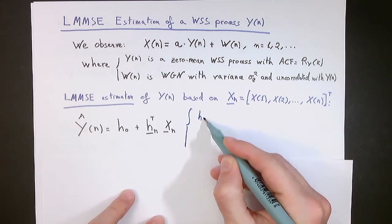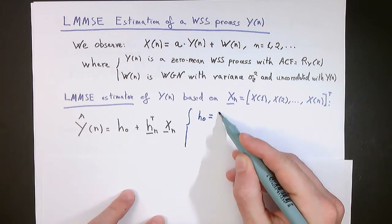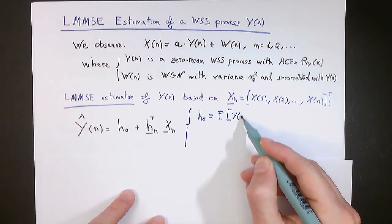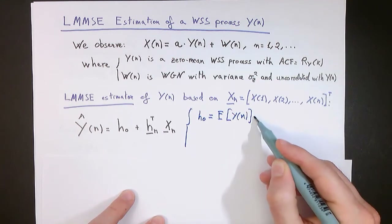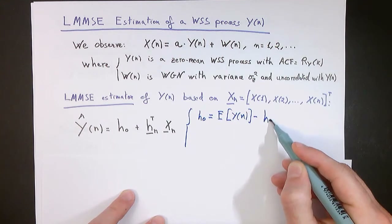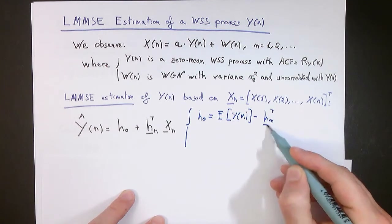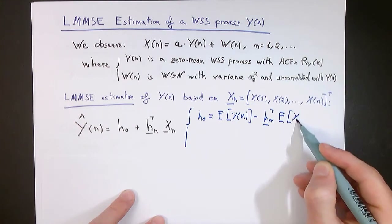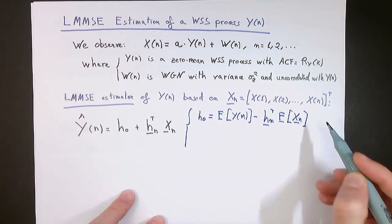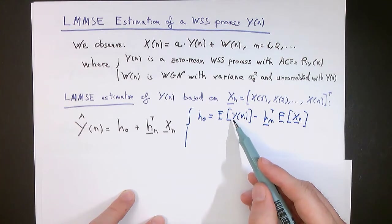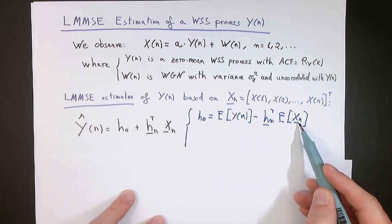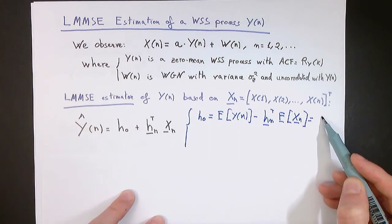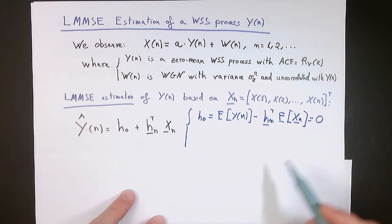The offset coefficient h_0 will be equal to the expectation of y of n minus the vector of other coefficients multiplying the expectation of the vector of observations. Since both processes y and x are zero mean, these two expectations are zero, and therefore we can conclude that the offset coefficient will be zero.